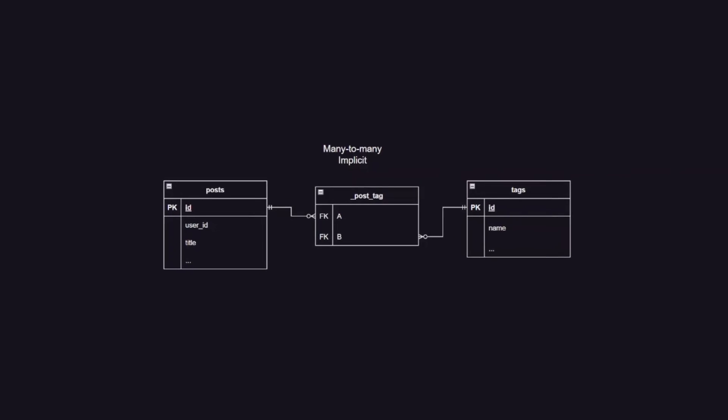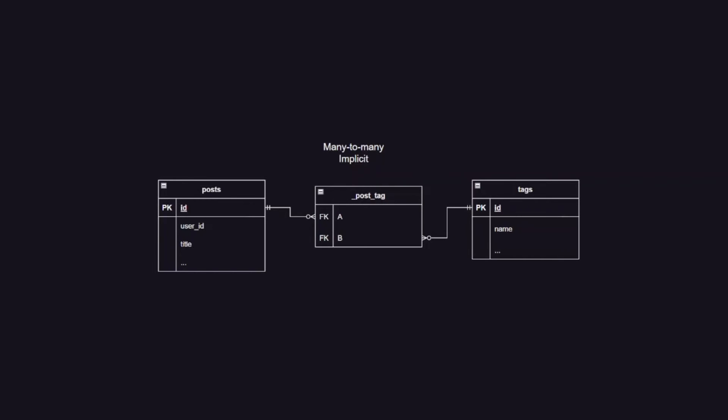Let's look at the diagram. In the implicit many-to-many relation, the joint table is created by Prisma. The post-tag table has an underscore to denote that. Also, the Prisma-created joint table has only two columns, A and B, which are foreign keys for posts and tags. That's all we get with implicit many-to-many relation, and frankly, in most cases it's all you need. However, in rare instances you would like to add more fields to the joint table, so you need to use explicit many-to-many.